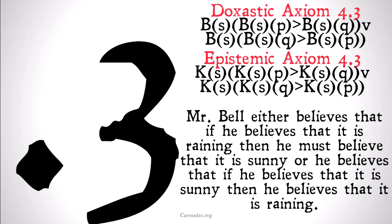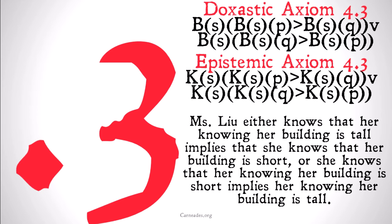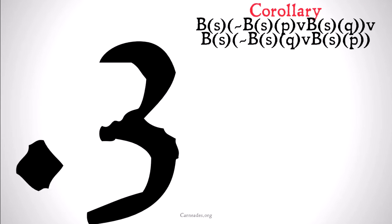That's the point here: people often believe that the laws of logic are false. As we've noted before, this is a major problem for doxastic and epistemic logic, because people often believe the laws of logic are false because they are often counterintuitive. An especially counterintuitive one is 'P implies Q or Q implies P.' For example, Miss Lu either knows that her building being tall implies she knows it is short, or she knows that her building being short implies she knows it is tall — basically the same problem.